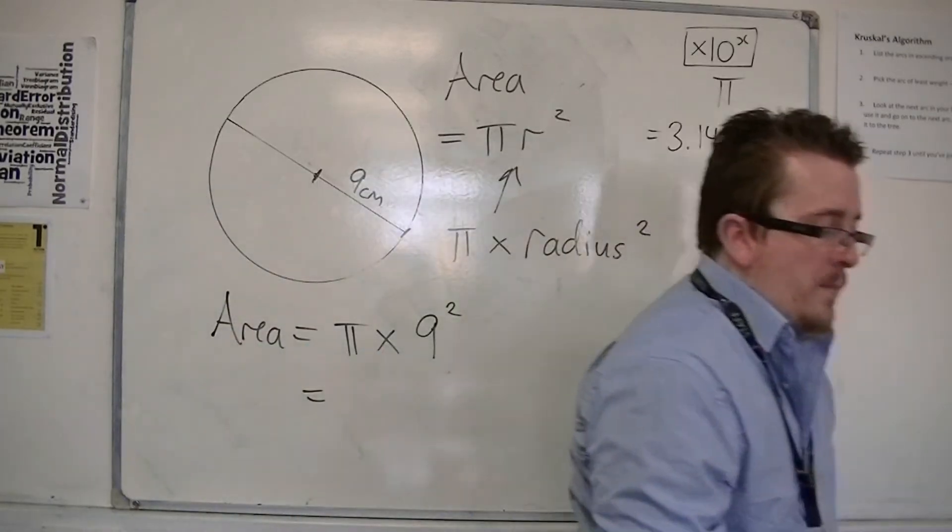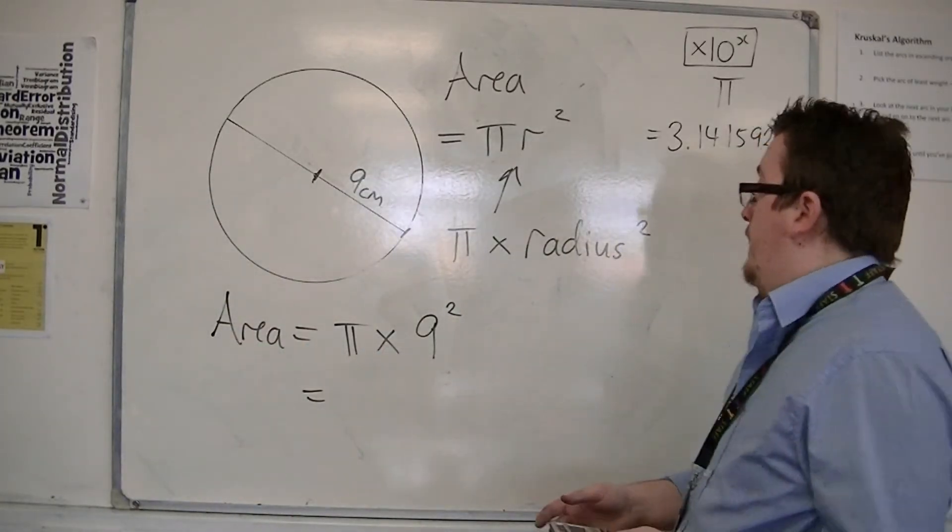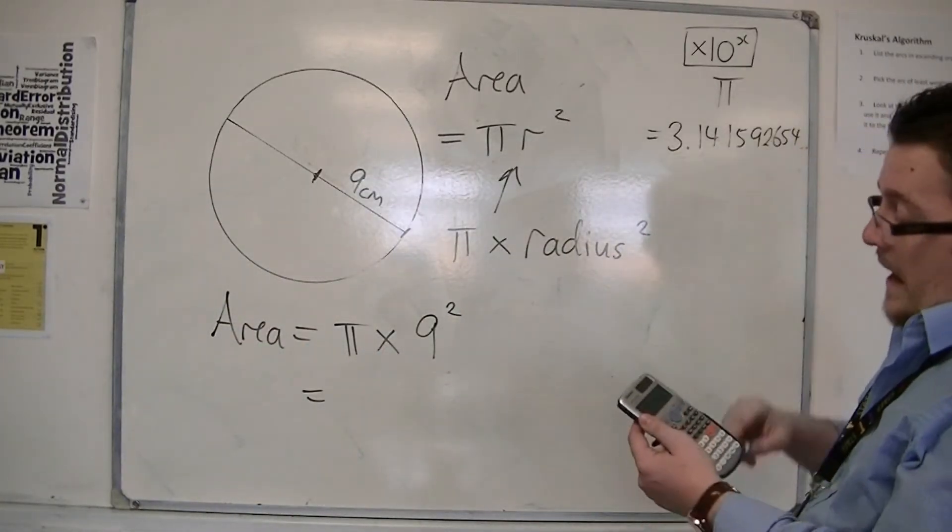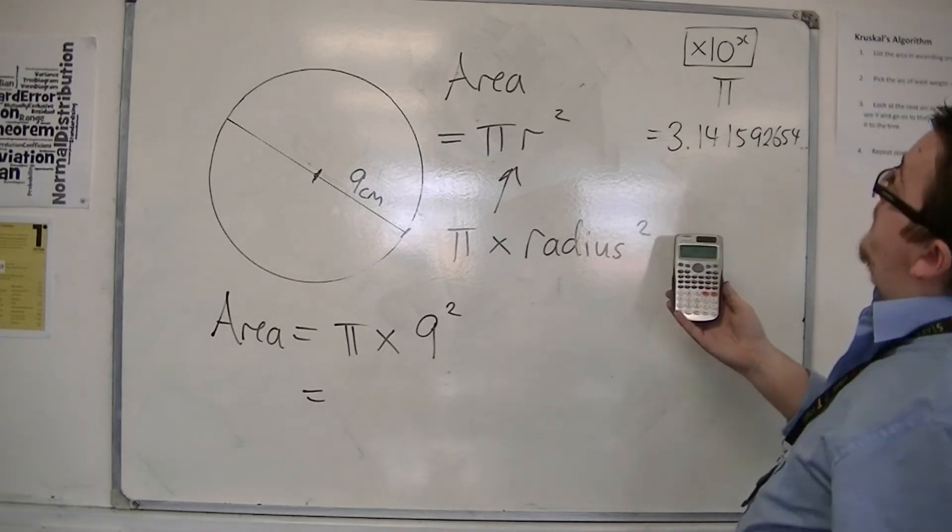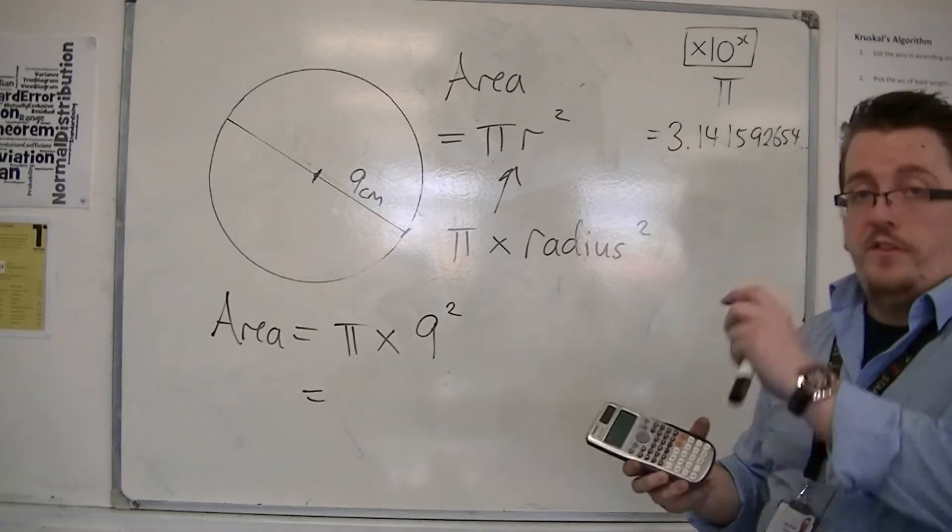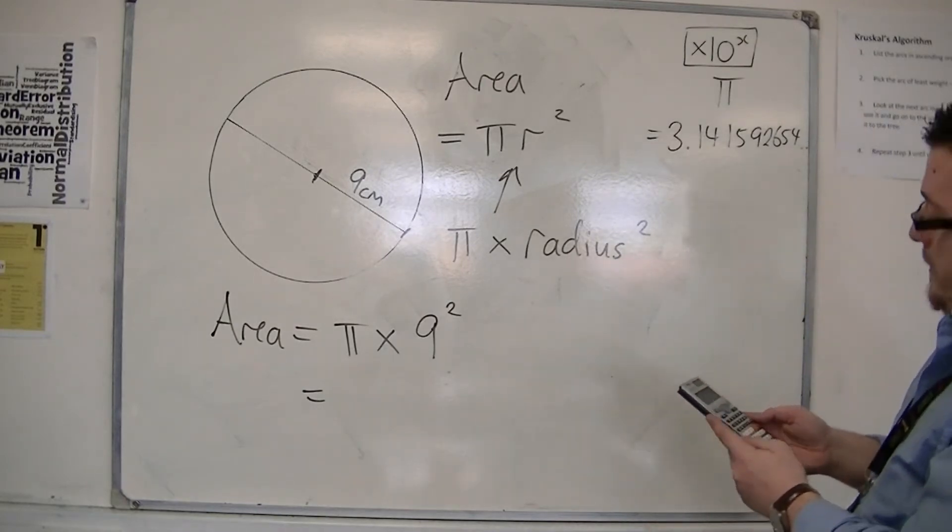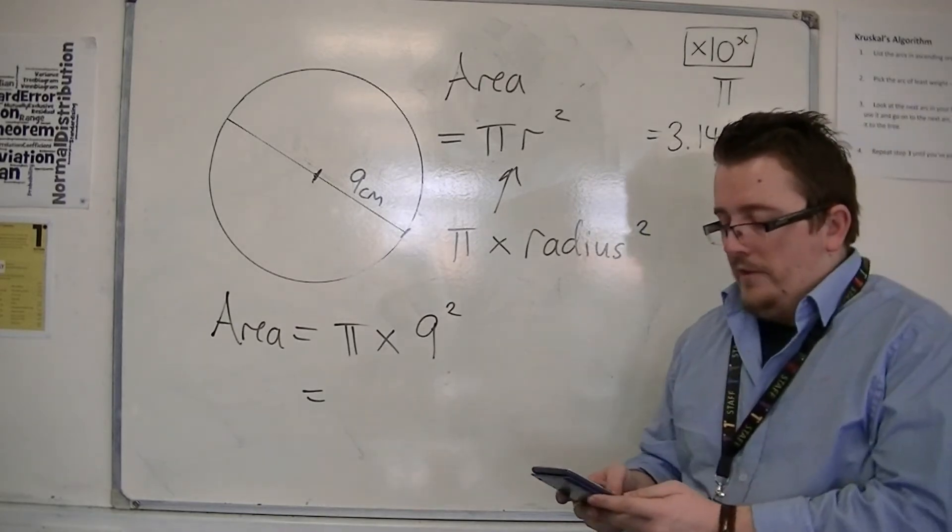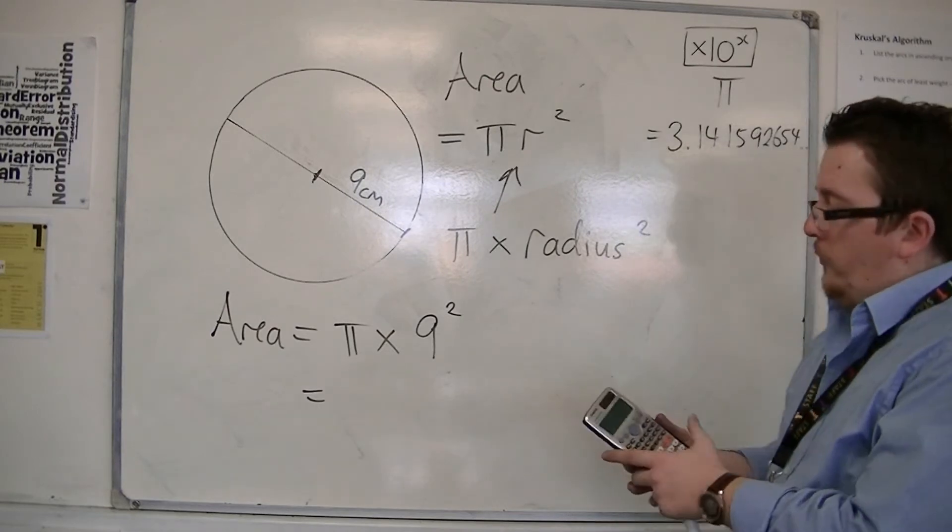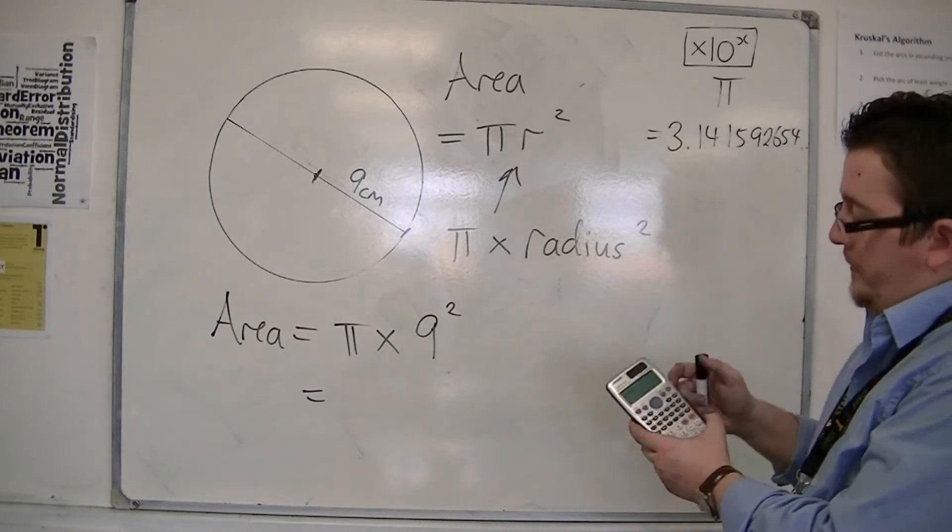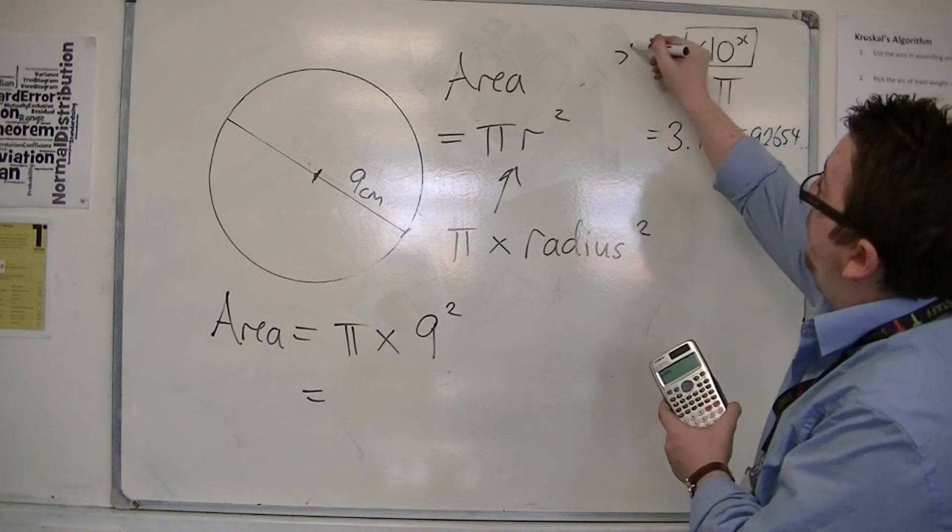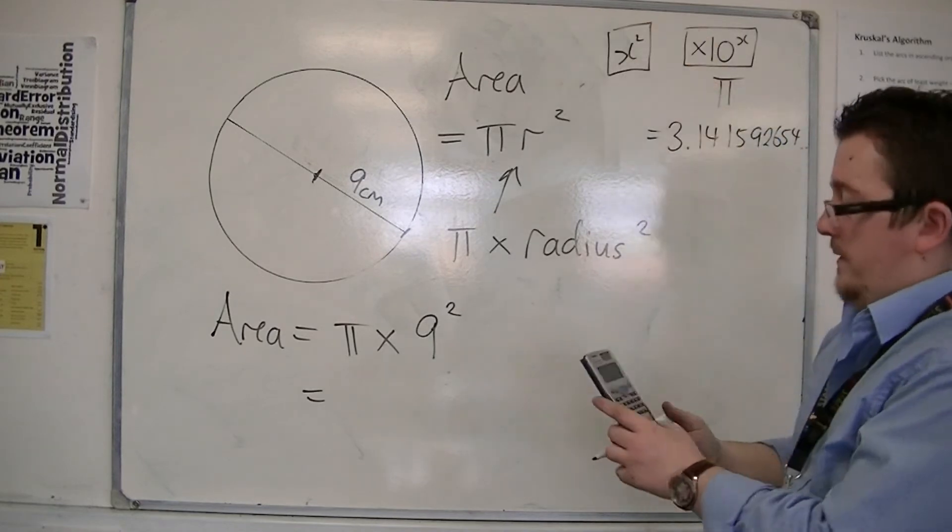So we find the pi button. Remember, on a Casio, right down the bottom, times 10 to the x, you'll see it, and pi is the little yellow bit above. So shift, then that button, times by 9 squared. Remember the squared button is the x squared, looks like this, equals.